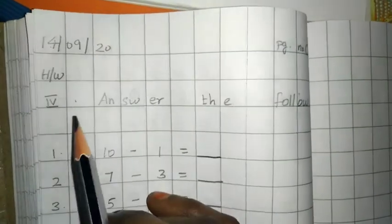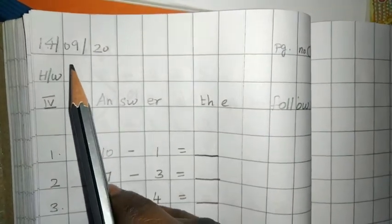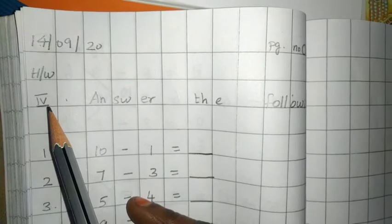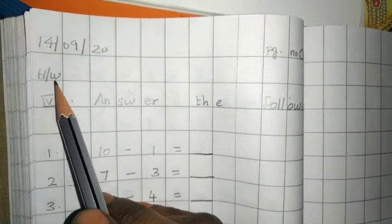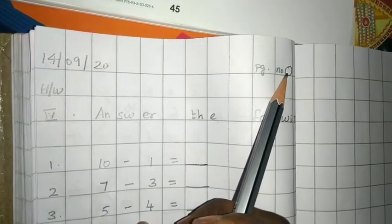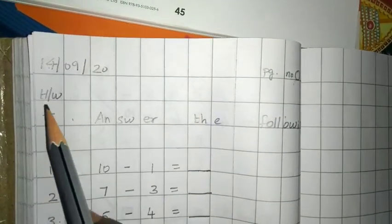Today you have to write classwork copy for the fourth chapter. Write today's date like this, and write HW below the date. You have to write the page number at the end of the first line.